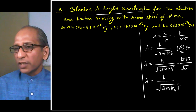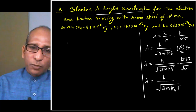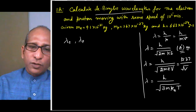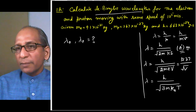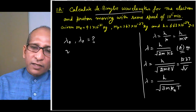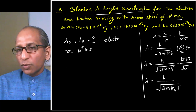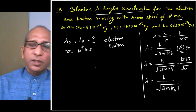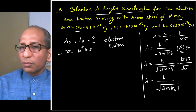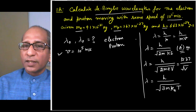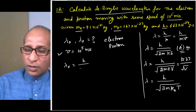First numerical problem: Calculate the De Broglie wavelength for the electron and proton (λ_e and λ_p), both moving with the same speed of 10⁵ m/s. Mass of electron, mass of proton, and Planck's constant are all given.